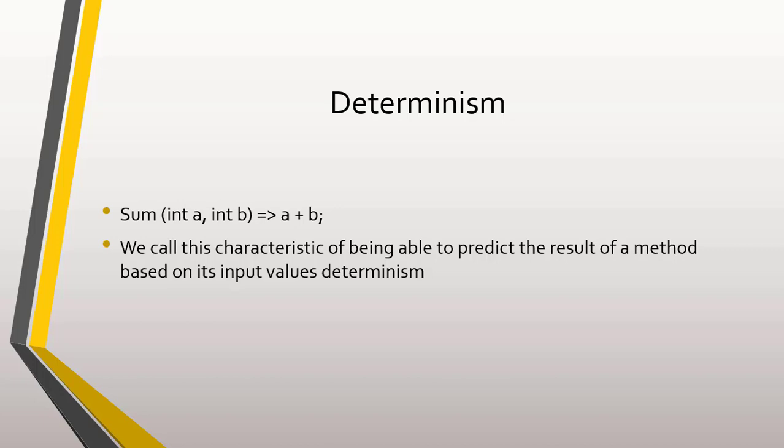What happens in the opposite case? That is, when we have a method which we cannot predict the exact result it will yield. Well, we say then that we are facing a non-deterministic method.